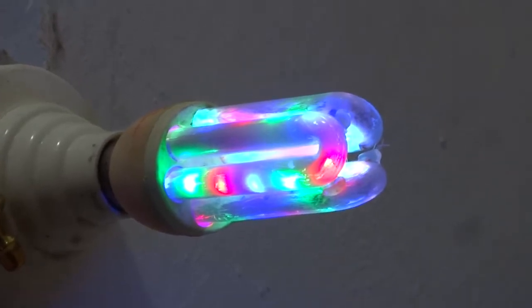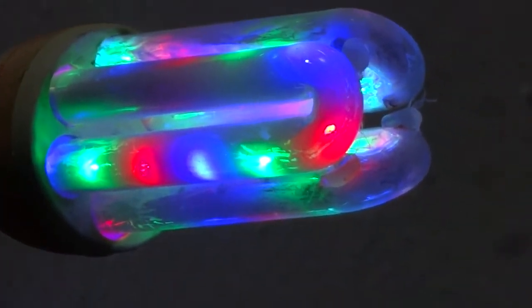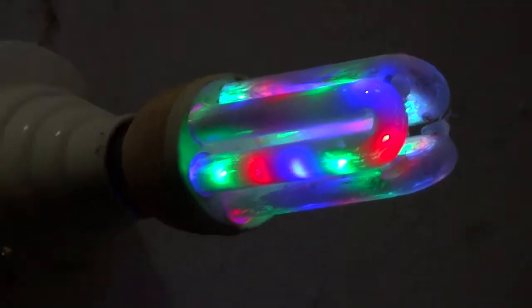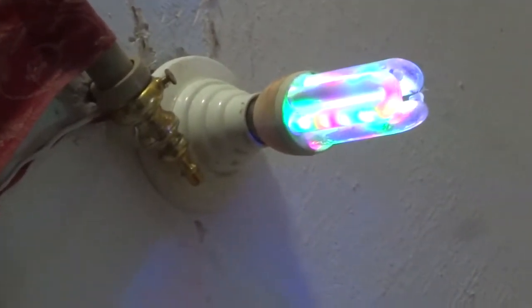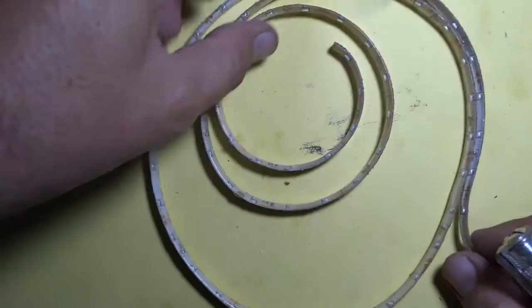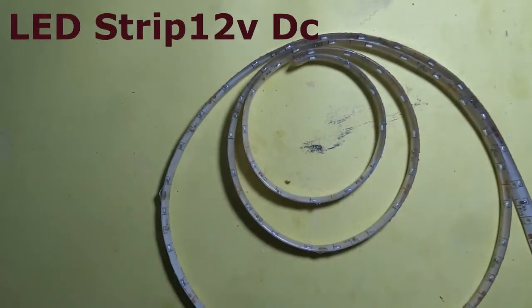In this video, I will make a brilliant colorful energy saver with old energy saver components. You need one old energy saver and one LED strip. I have made it on 12 volt DC, you can make it on AC main supply.